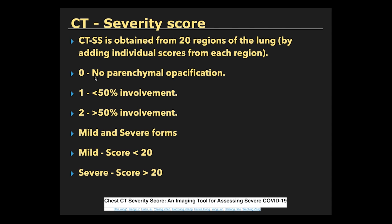The score is distributed as follows: if there is no parenchymal opacification, a score of 0 is given. If a segmental region has less than 50% involvement, a score of 1 is given for that segmental region. If there is more than 50% involvement of the lung parenchyma in the segmental region, a score of 2 is given.